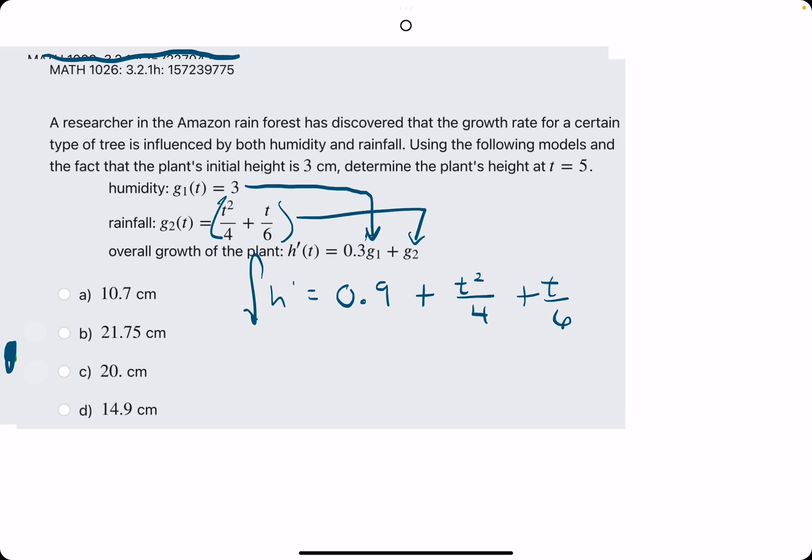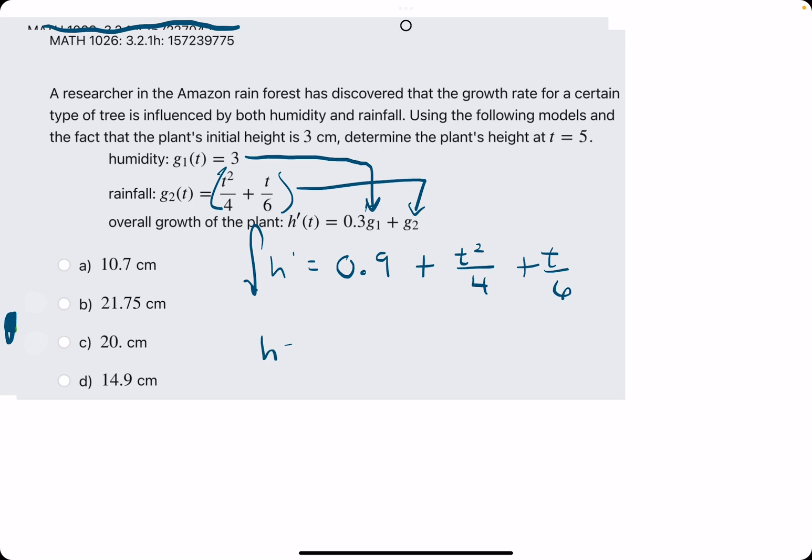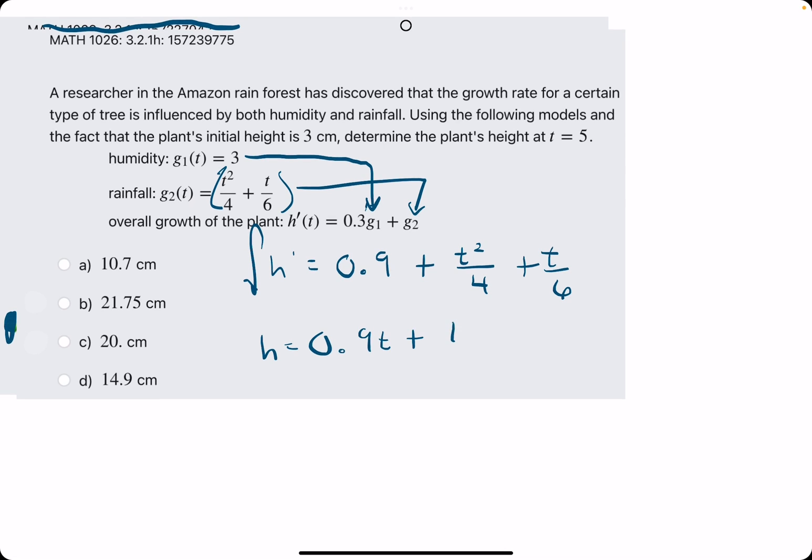Taking the integral or antiderivative of both sides, we get h equals 0.9t plus t cubed over 3, but the 4 also stays in the denominator, 3 times 4 is 12, plus t goes to t squared over 2, but 6 was already in the denominator so that stays, and 2 times 6 is 12. So add C.